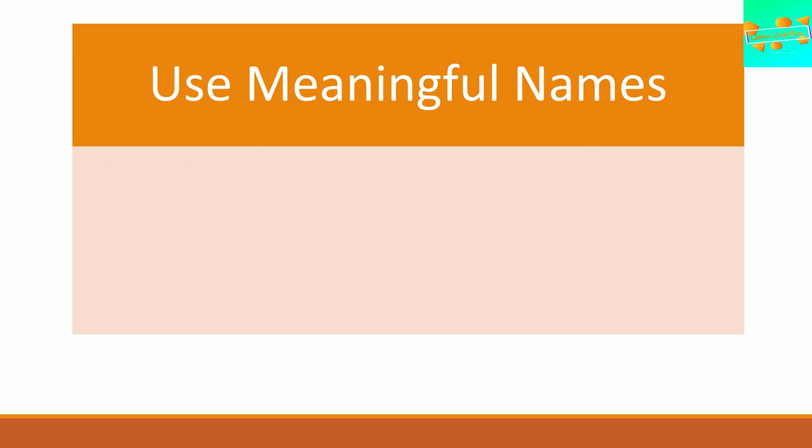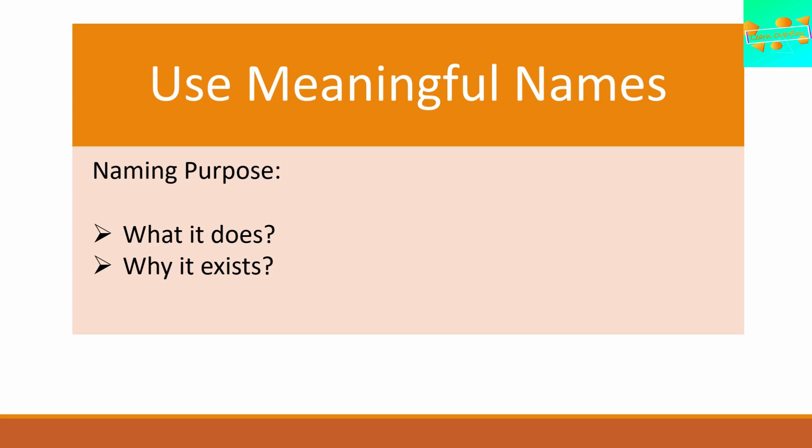Whatever names you mention in your code should fulfill three basic purposes. First, what it does — the name should tell what it does. Second, why it exists — it should be clear to the reader why that variable or function is there. Third, how it is used — especially in the case of functions. For example, if you name a function 'FIBO', it's not quite clear enough; try to name it in a more detailed manner, like 'fibonacci'. Give a full, detailed name to your functions and variables. So these three purposes — what it does, why it exists, and how it is used — should be kept in mind before naming any variable or function. That's the meaning of using meaningful names.